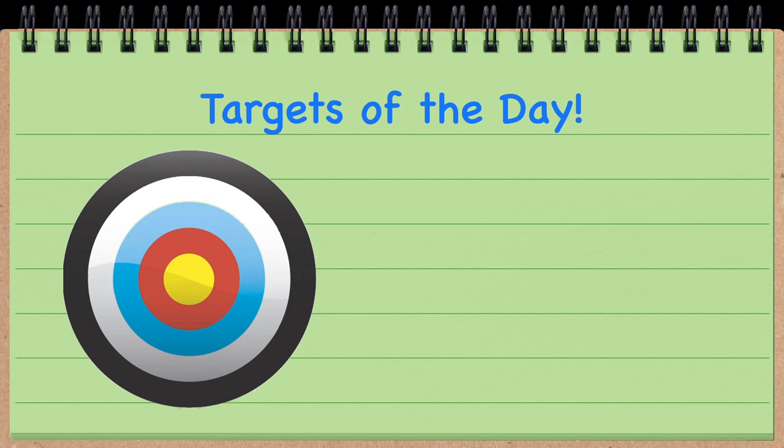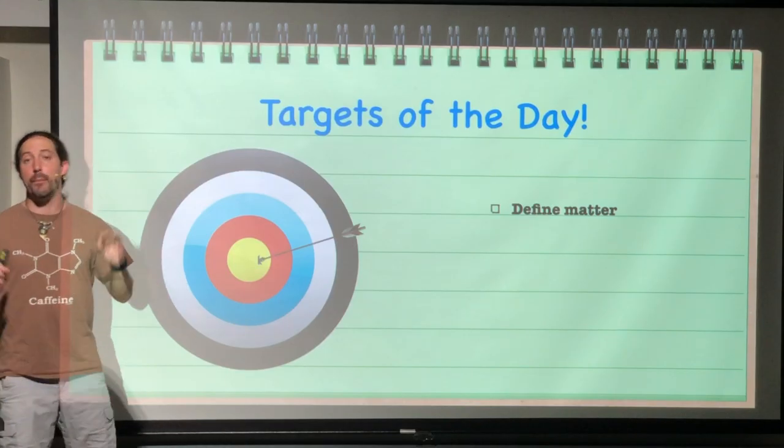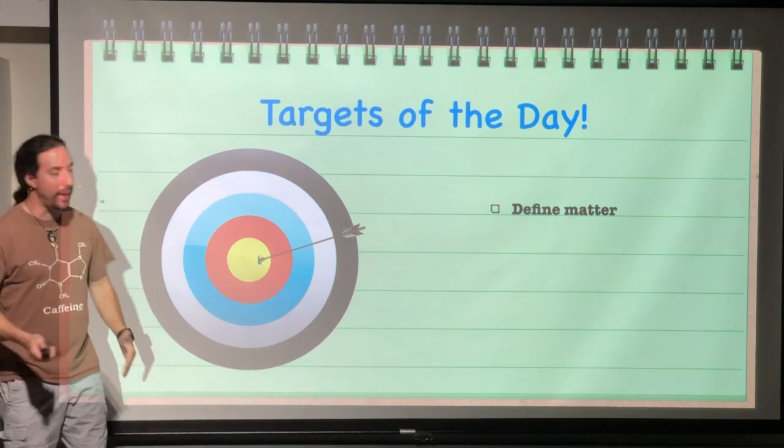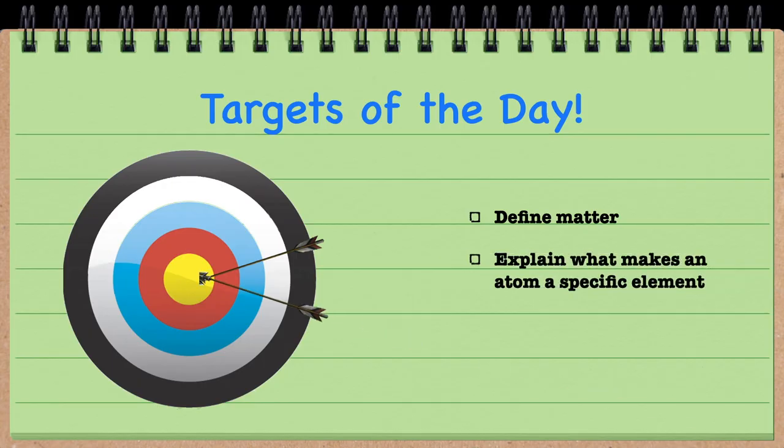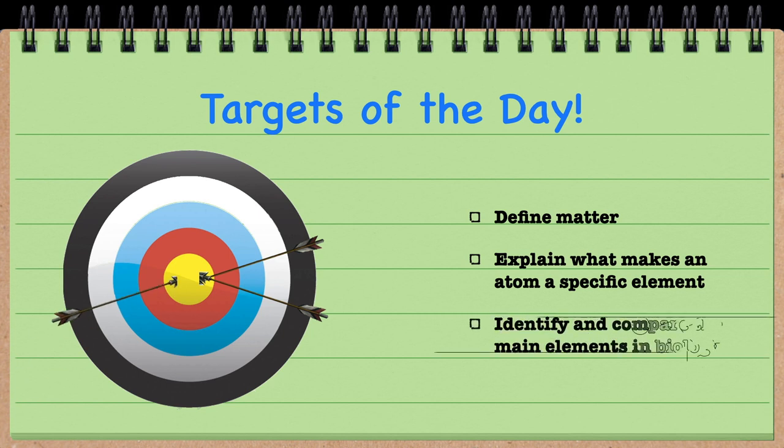Our learning targets: first we are going to define what matter is. And after we define matter, we are going to look at what makes an atom a specific type of atom. And lastly, identify and compare the four main elements that we care about in biology.